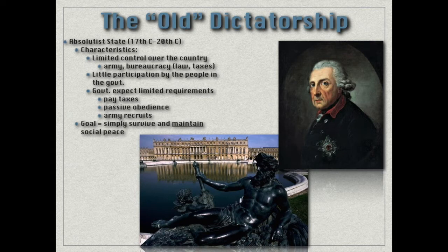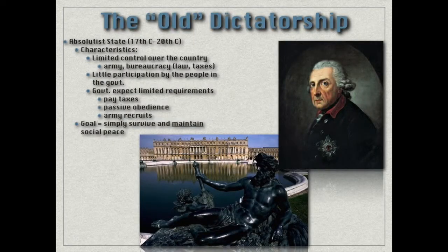These rulers don't control your daily lives. Sometimes they have control over religion but even that is limited because people secretly participate in other faiths. There's very little participation required of the people other than paying taxes, being passively obedient, or providing a body for the army if drafted. The goal of the absolutist state is simply to maintain control, promote enough peace to exist in a tough neighborhood, and win their wars. Things are dramatically different under the totalitarian states of the 20th century.